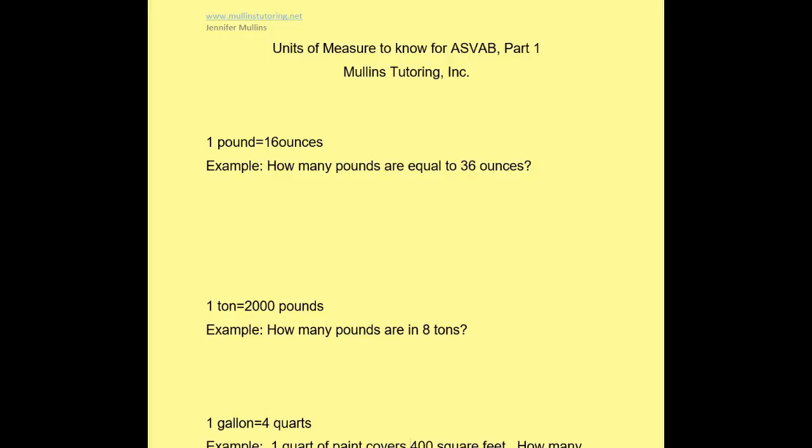So the first thing we want to review is weights. 1 pound is equal to 16 ounces. The reason this is important to know is that it will appear on the exam. There's not a lot of units, but the ones there are you really do need to know. So let's see how knowing that 16 ounces equals 1 pound can help you for the test. The question is: how many pounds are equal to 36 ounces?